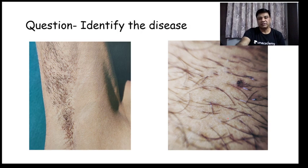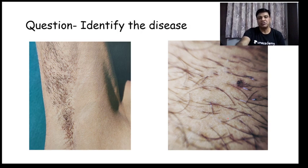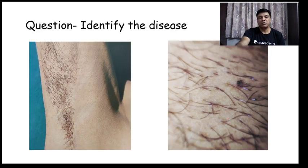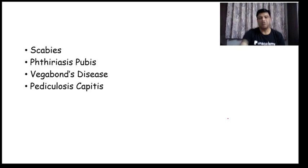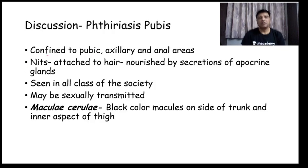Next question: identify the disease. Choices are scabies, phthiriasis pubis, vagabond's disease, and pediculosis capitis. As you can see, there is involvement of the axillary region — this is a patient having phthiriasis pubis. In phthiriasis pubis, it is confined to the pubic, axillary, and anal areas. Nits are attached to hair and nourished by secretions of apocrine glands.